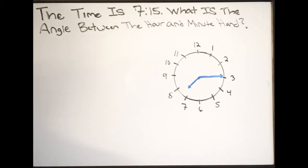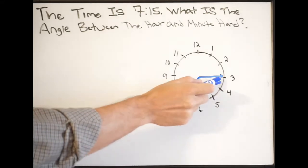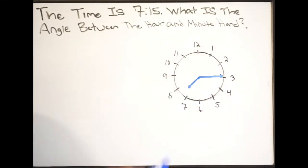In this example we're being told that the time is 7:15, and then they're asking what is the angle between the hour and minute hand. So they want to know the angle between here's our hour hand and here's our minute hand. What is this angle here? So how are we going to do this problem?